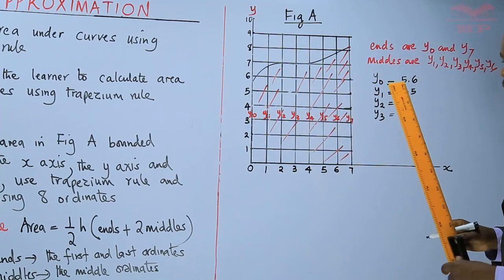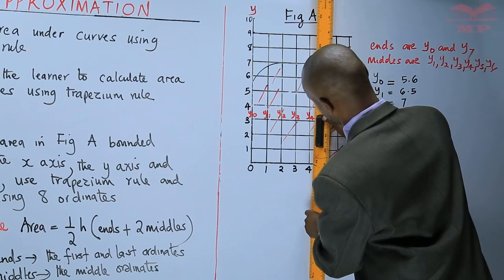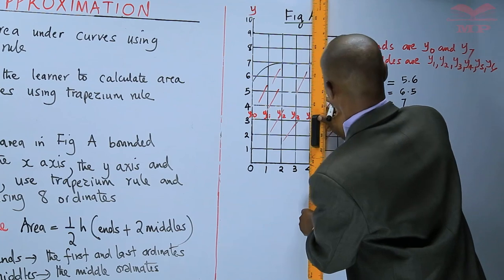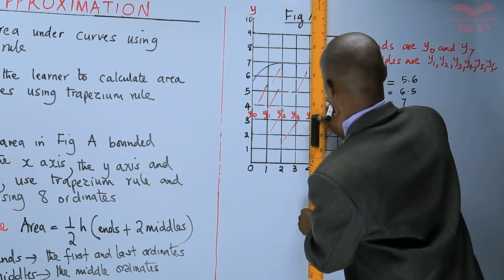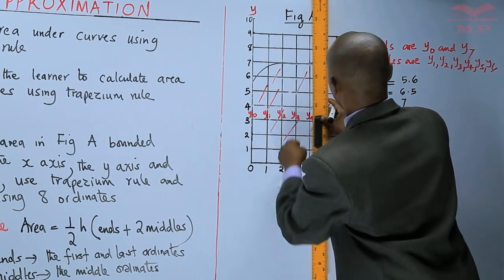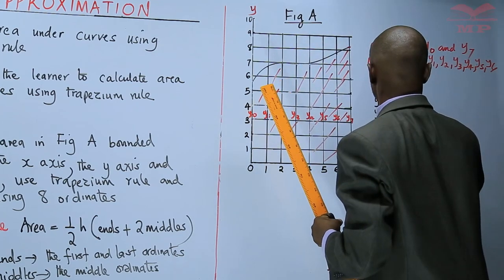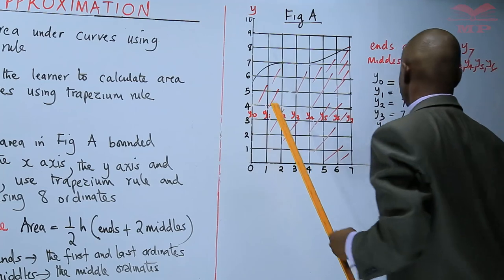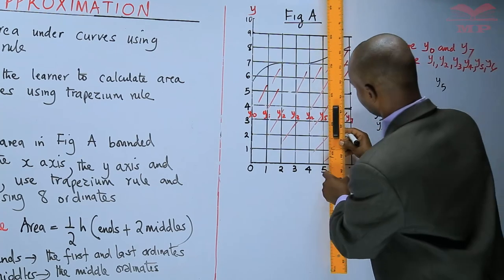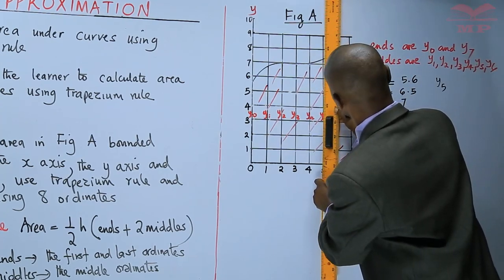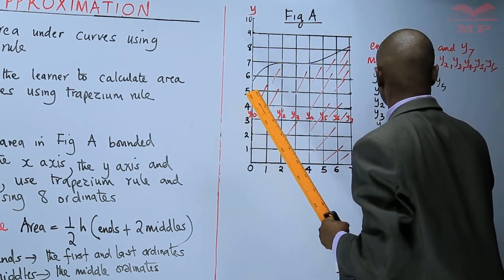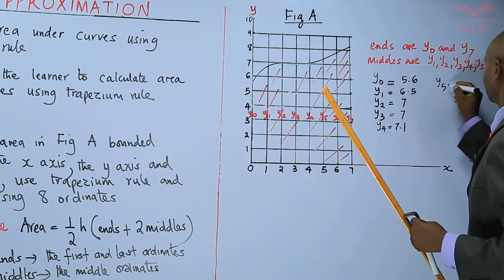We come to y4. y4 is 1, 2, 3, 4, 5, 6, 7.1. y5 is 7.1.